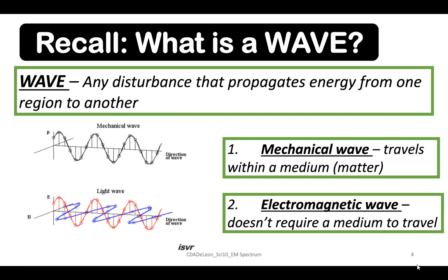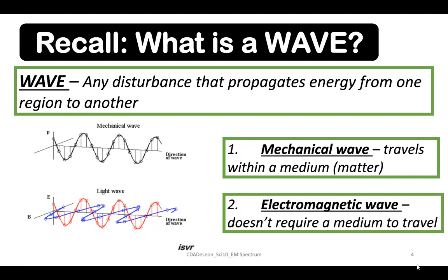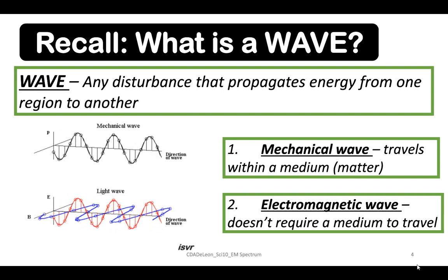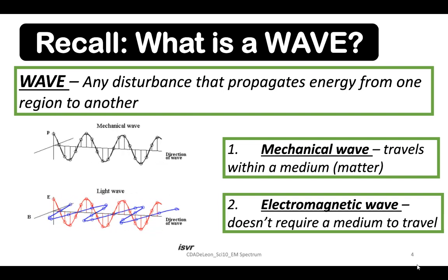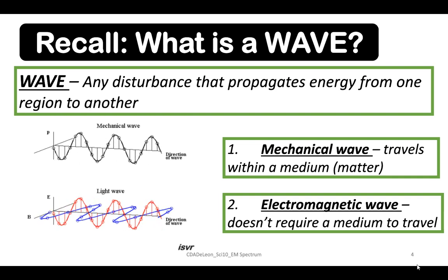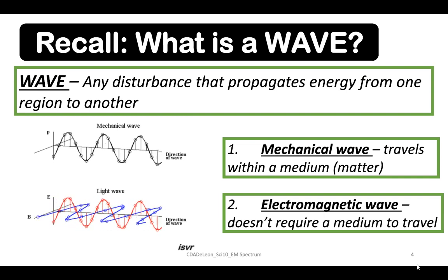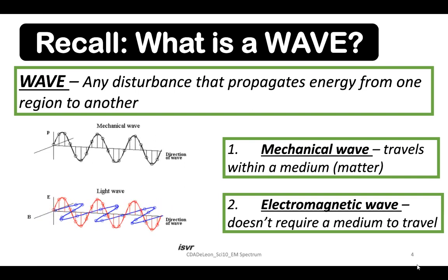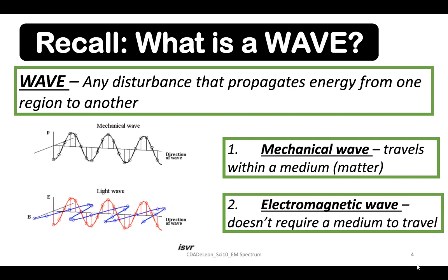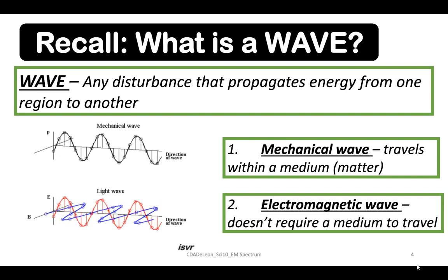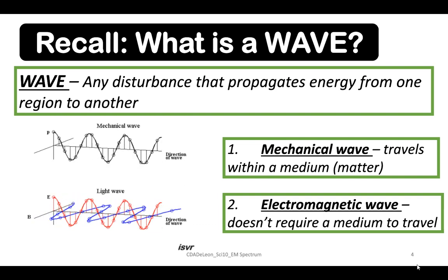An example of an electromagnetic wave is a light wave. When most people use the term light waves, they usually mean visible light. In physics, however, the term light waves tends to be used as a synonym for electromagnetic waves. Electromagnetic waves are made of oscillating magnetic and electric fields, and like all waves, they carry energy.